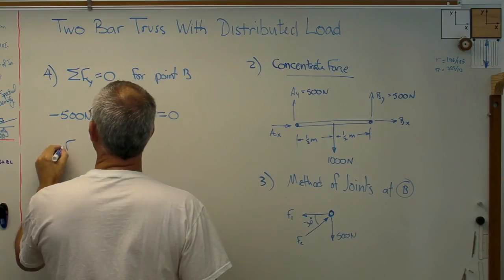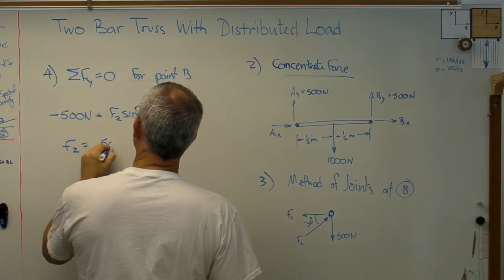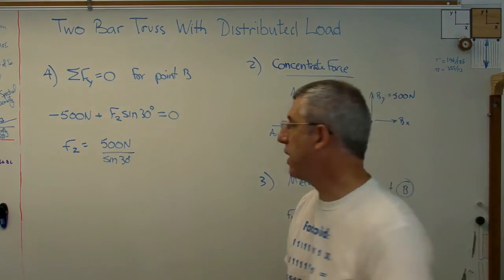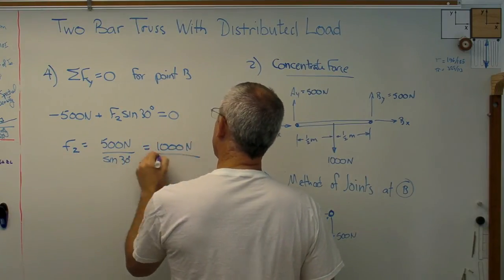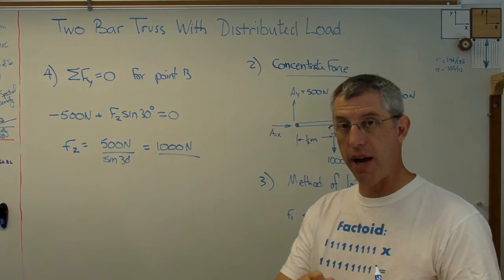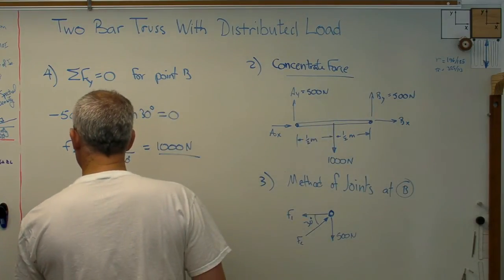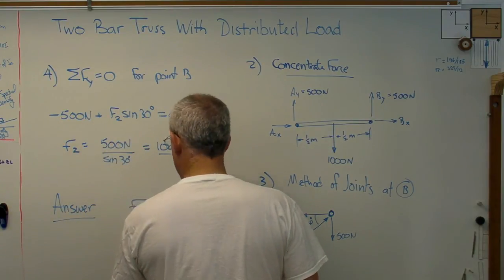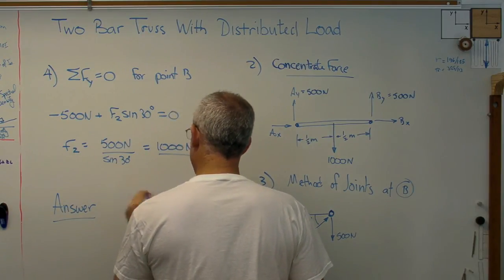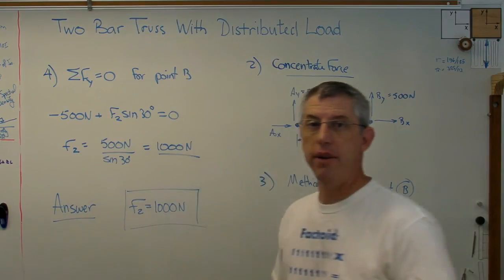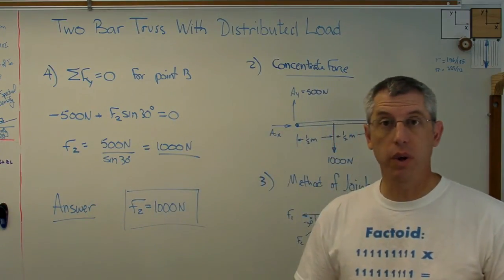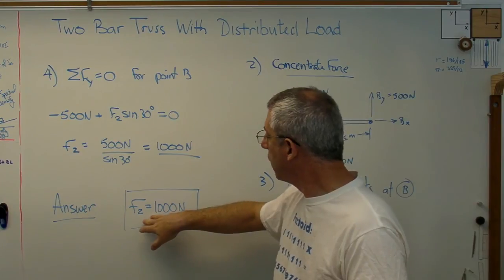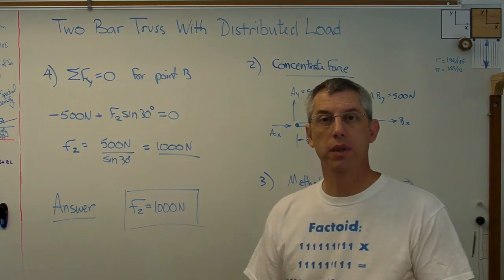F2 equals 500 newtons over sin(30°). Since sin(30°) equals 1/2, F2 equals 1000 newtons. I've completed the GFSA format: Given, Find, Solve, and now Answer. The answer is 1000 newtons. We dealt with a distributed load, concentrated it to find reaction forces, and found the force in F2. Hope this helps, and I'll see you next time.